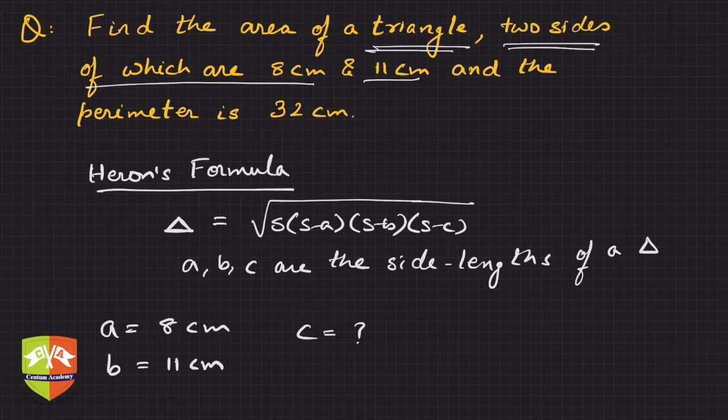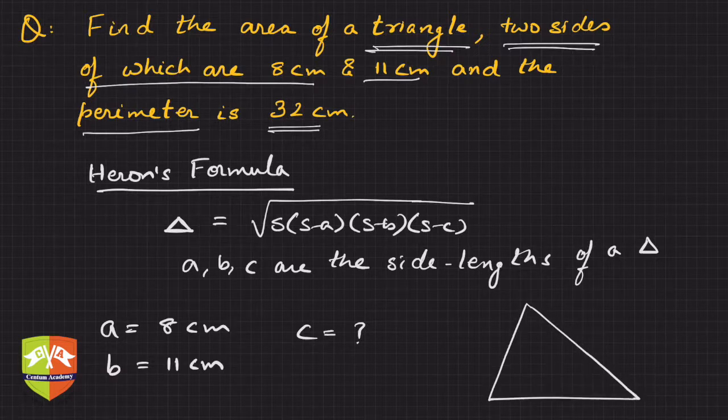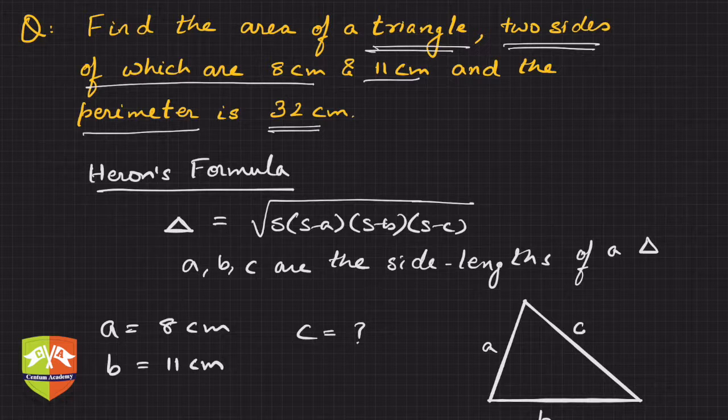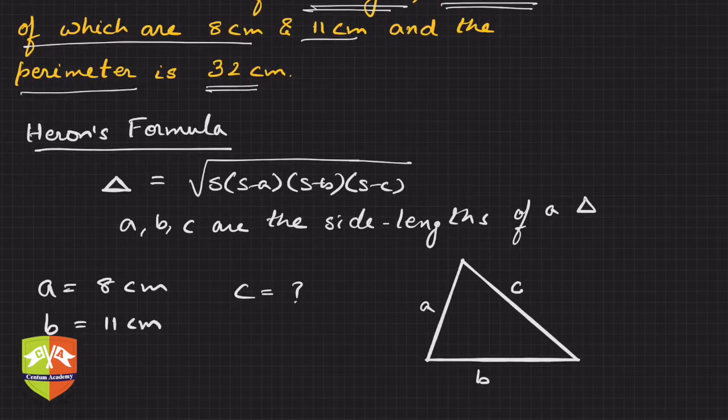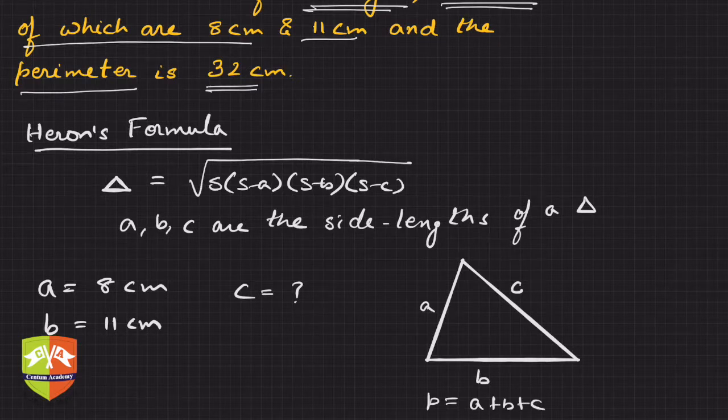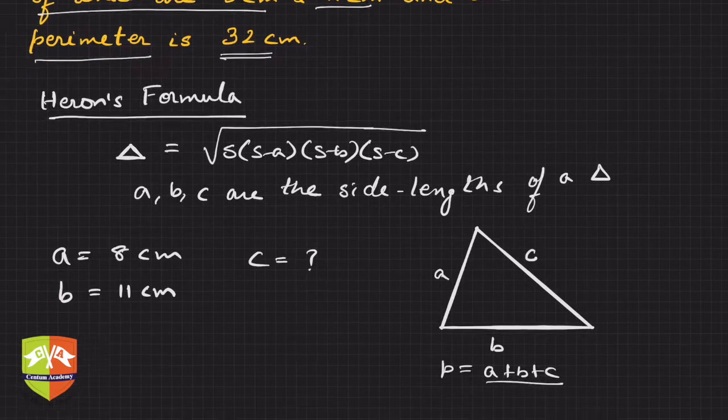But other information is given which is perimeter is 32 centimeter. What is perimeter? If you have a triangle like this, perimeter is - let's say this is side a, this is b, and this is c. So perimeter p is a plus b plus c, right?